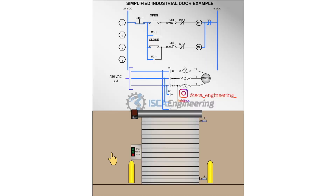The example we have provided is of a simplified industrial garage door. The garage door is provided with limit switches in order to prevent the motor from running continuously and thus damaging the door. These limit switches have been wired as normally closed, meaning that whenever the limit switch is not actuated, it provides power to the motor when their respective button is pressed. So let's take a look at the circuit.